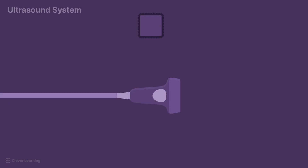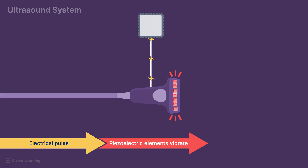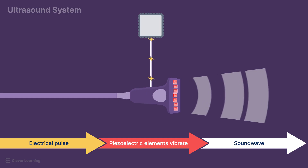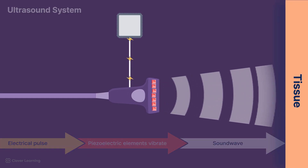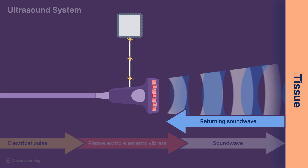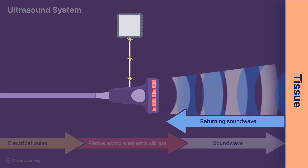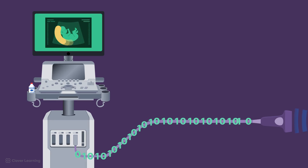To understand how the system forms an image, it helps to think through the full cycle. The pulsar sends an electrical signal to the piezoelectric elements inside the transducer. The elements vibrate and produce sound waves, which travel through the body. As these waves encounter tissues, some of the sound is reflected back to the transducer. The transducer elements then convert the returning echoes into electrical signals, which are processed into digital data, converted into a visual format, and displayed as an image in real time.